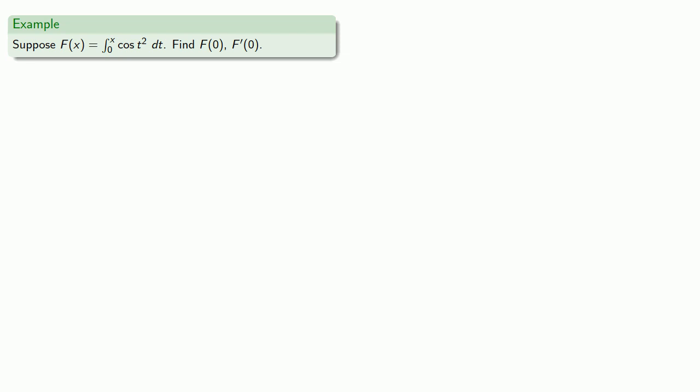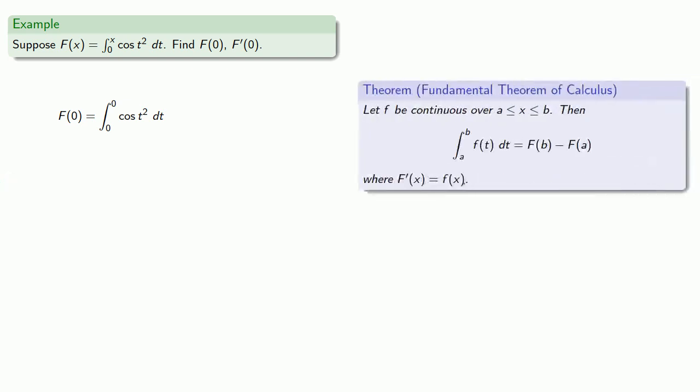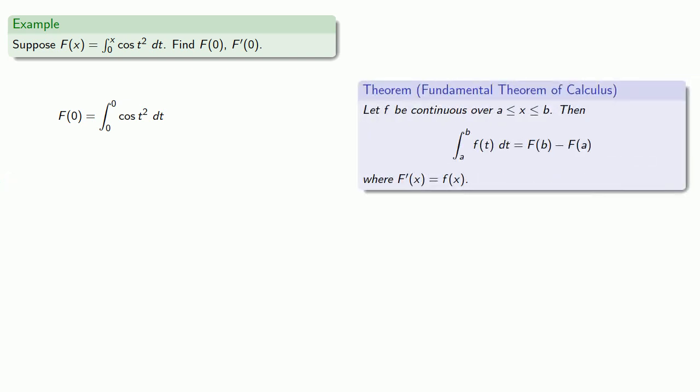So definitions are the whole of mathematics. All else is commentary. f of 0 is, according to the definition, the integral from 0 to 0 of cosine t squared dt. The Fundamental Theorem of Calculus says that this is the difference between some function g evaluated at 0 minus g evaluated at 0, where g prime of x is cosine x squared.